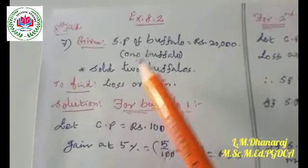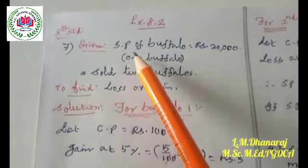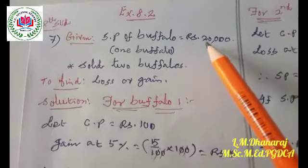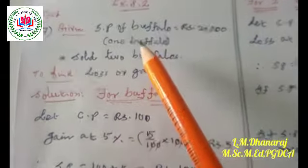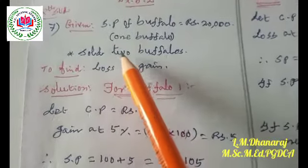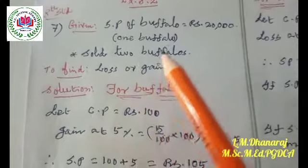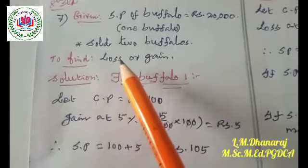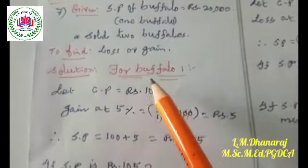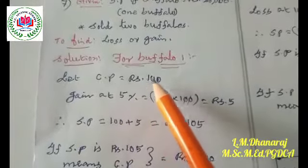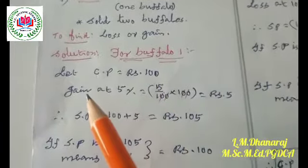Question number seven: it is given that the selling price of a buffalo is rupees 20,000. So the selling price of one buffalo is 20,000. There are two buffaloes, and we have to find out whether it is a loss or gain. For the first buffalo, let us consider the cost price as rupees 100.